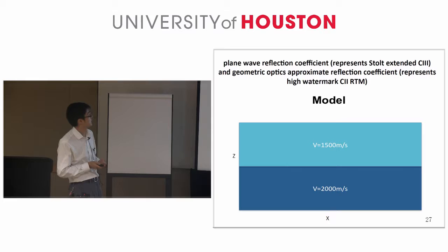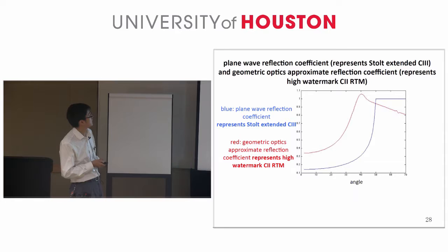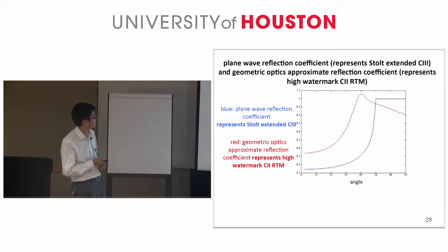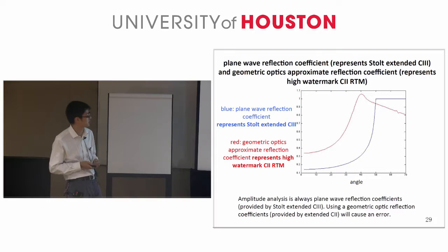Here it shows the one-reflector model comparison. The plane wave reflection coefficient representing STOE extended collaborative 3 is shown in blue. The red line is the geometric optics approximate reflection coefficient representing the collaborative 2 RTM. We can see they have a similar trend, but the values are quite different. For amplitude analysis, the correct result is always the plane wave reflection coefficient, which can be provided by STOE extended collaborative 3. Using the geometric optics reflection coefficient provided by extended collaborative 2 will cause error.